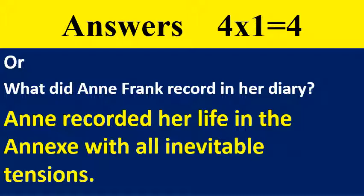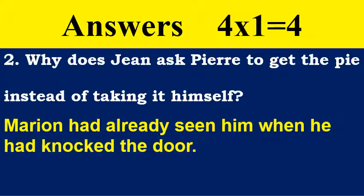Option question: What did Anne Frank record in her diary? Anne recorded her life in the annex with all its inevitable tensions. Why does John ask Pierre to get the pie instead of taking it himself? Marion had already seen him when he knocked at the door — that's why John asked Pierre to get the pie instead of taking it himself.